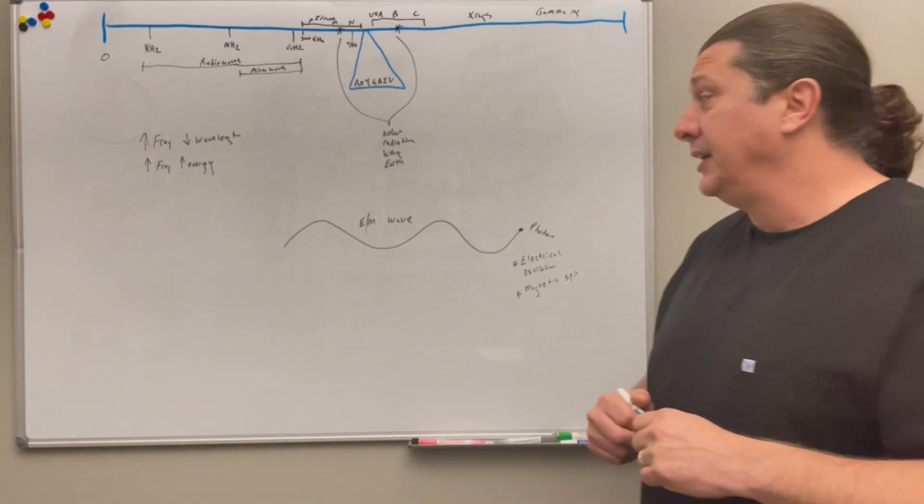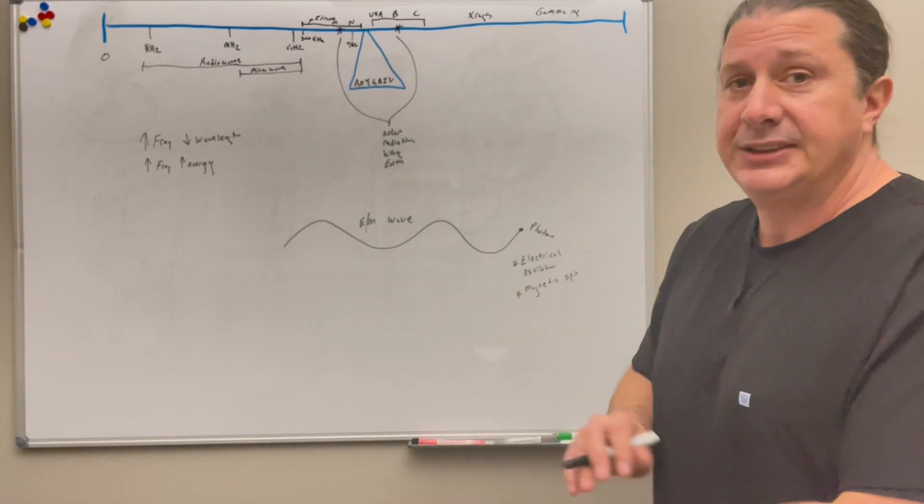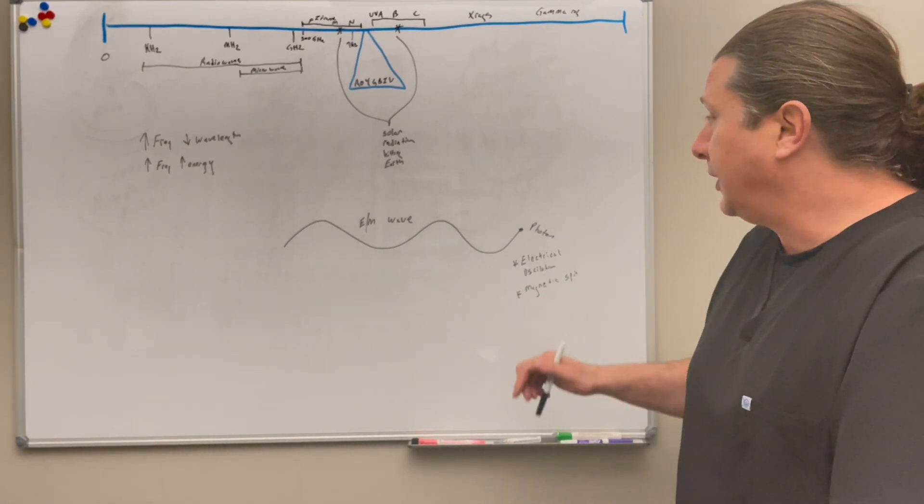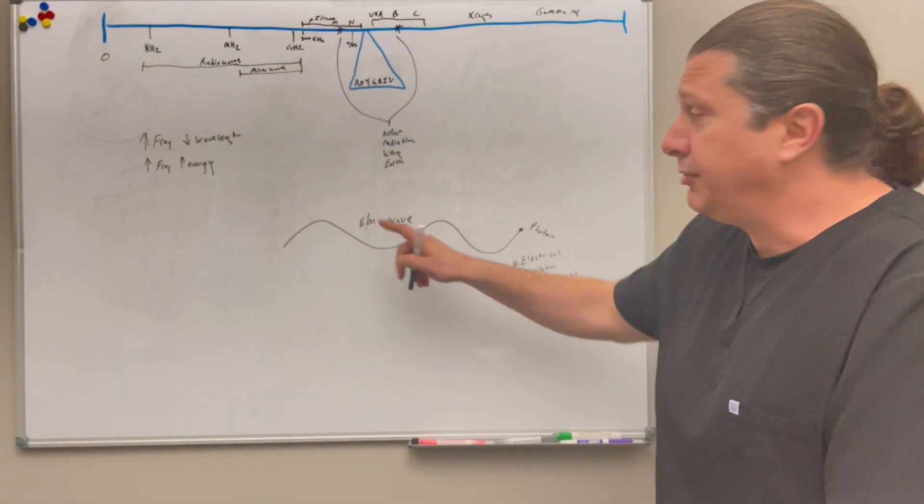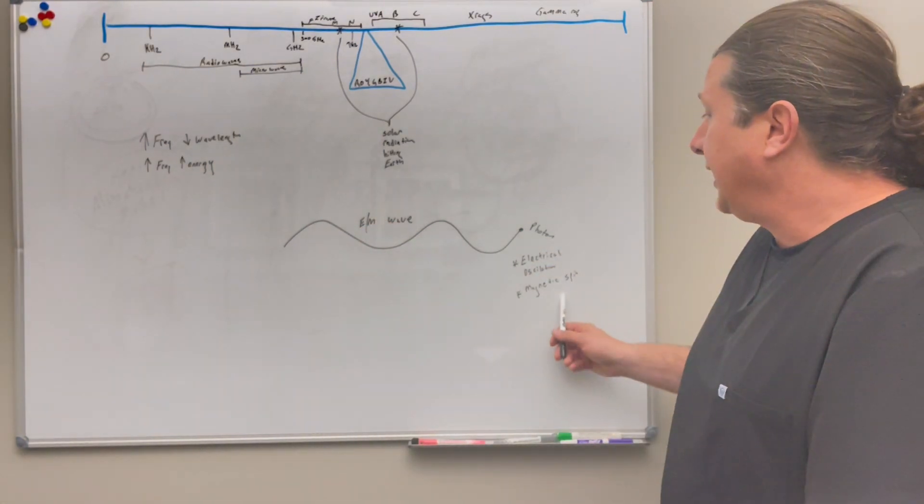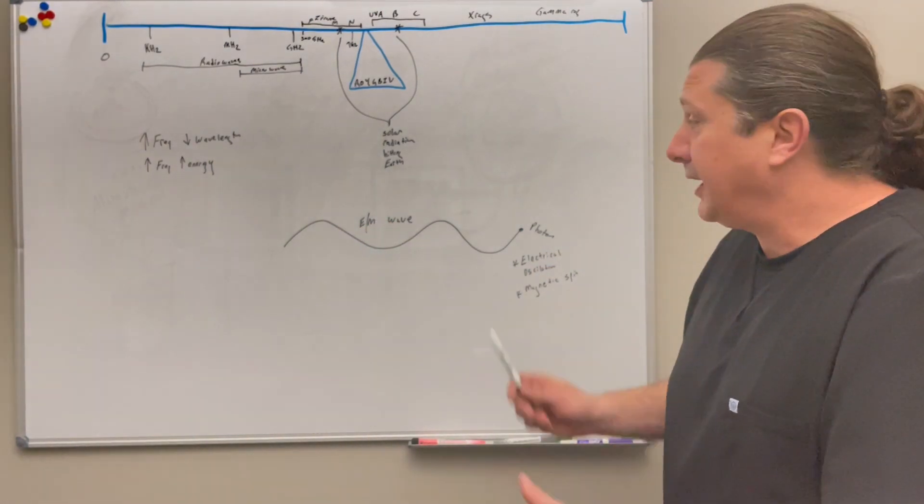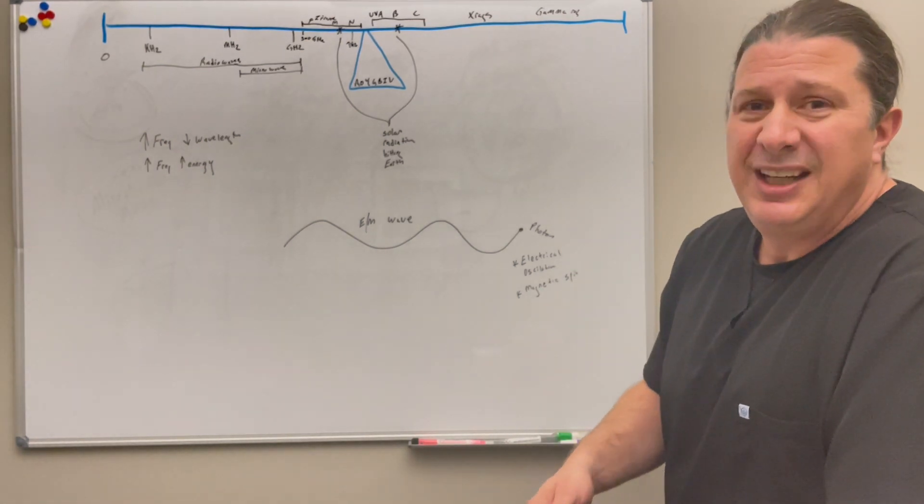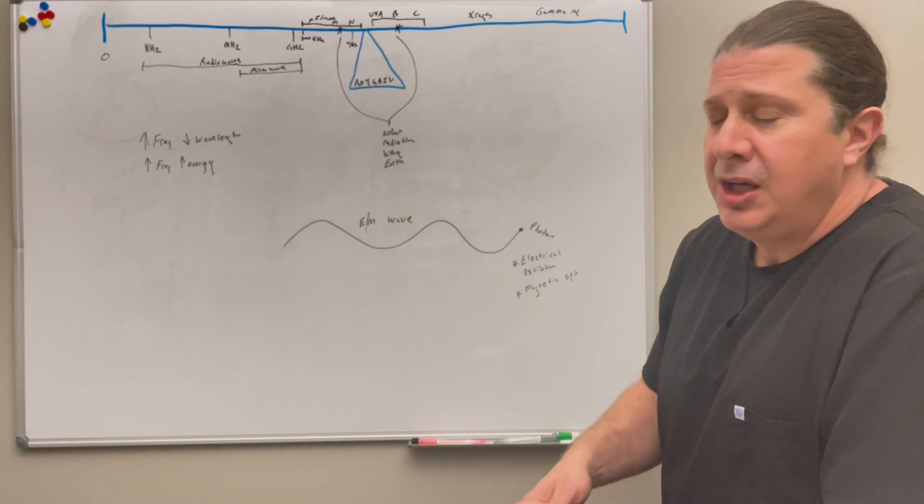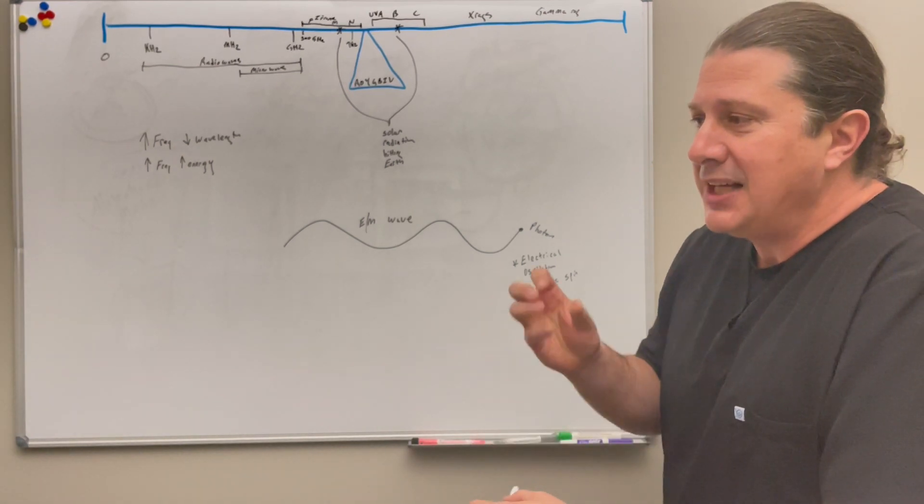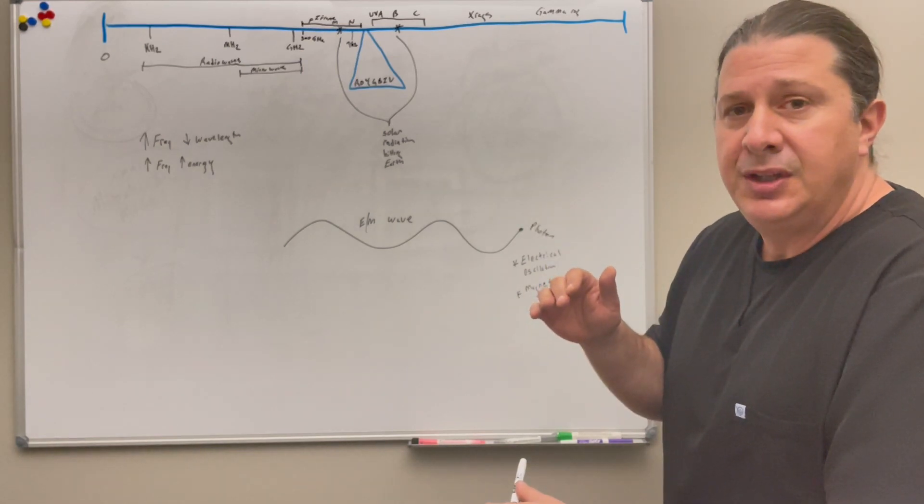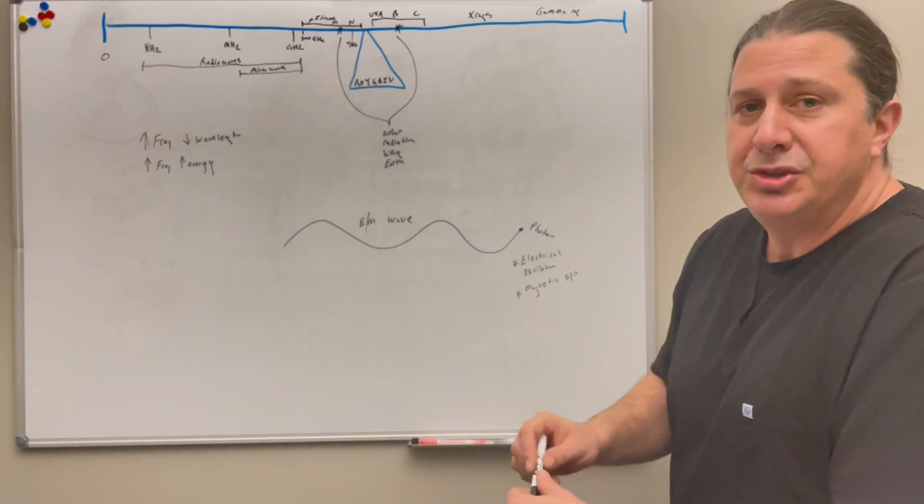Electromagnetic energy is basically a wave. It's energy that has two components to it. It's got an electrical oscillation, which is the wave property of it, and it's got a magnetic spin. At the very tip of electromagnetic energy is a photon. It's a massless packet of energy that carries an electrical oscillation but also has a magnetic spin to it.